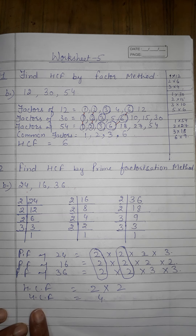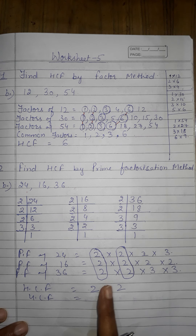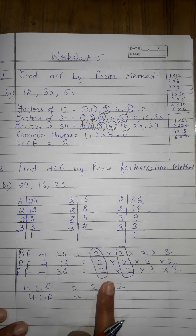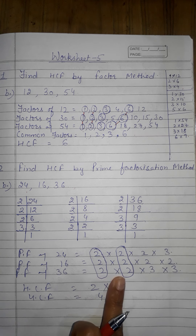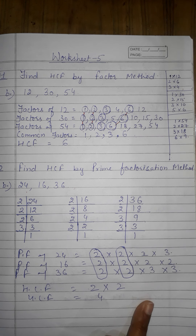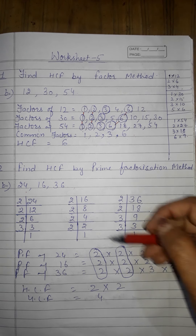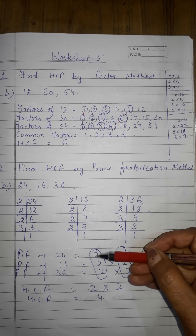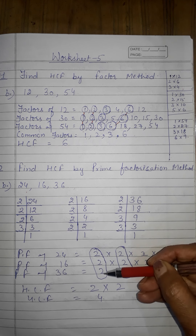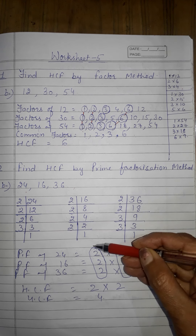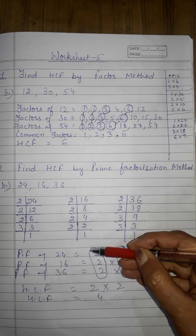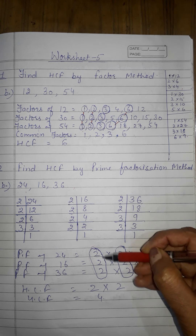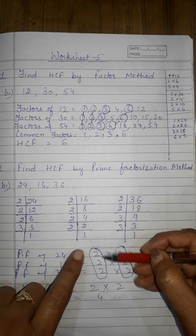To find the HCF, we multiply the common prime factors of all three numbers. Looking at the common factors: 2 appears in all three — 24 has three 2s, 16 has four 2s, 36 has two 2s — so two 2s are common to all three.